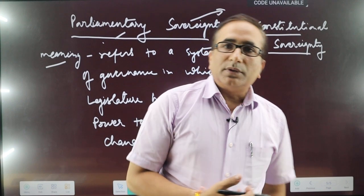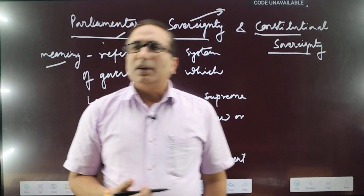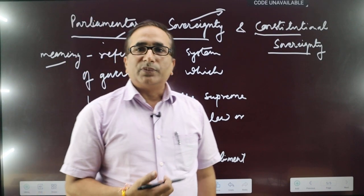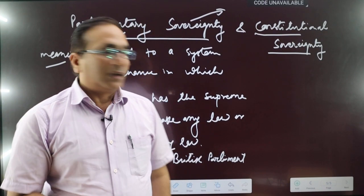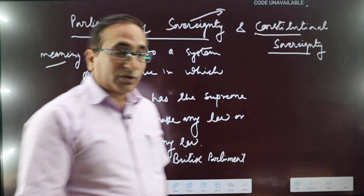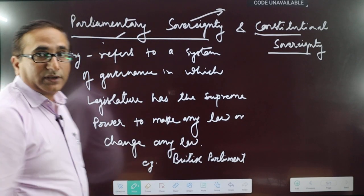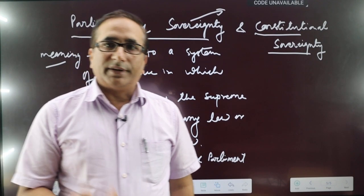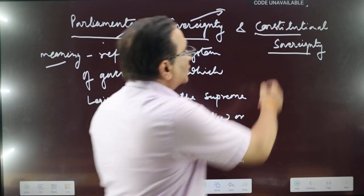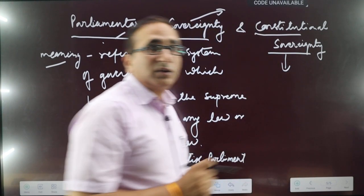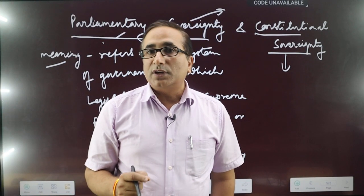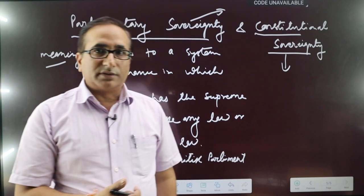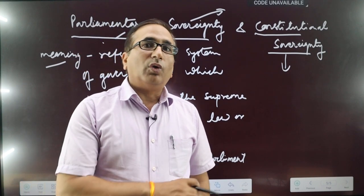Contrary to this concept, India has adopted a different approach. If we see the Indian constitution, we find that in India there is constitutional supremacy — there is not parliamentary sovereignty. Constitutional sovereignty means the constitution is supreme. The constitution has to be abided by all the organs of government, and the constitution cannot be overridden.